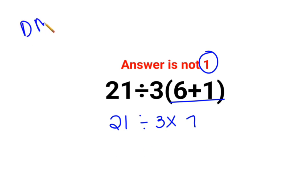So in sums like these, you have to go from left to right. Whatever operation happens first on your left-hand side has to be done first. So we'll do 21 divided by 3, which is 7, multiplied by 7.